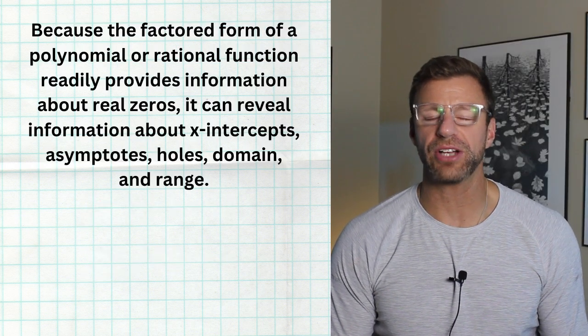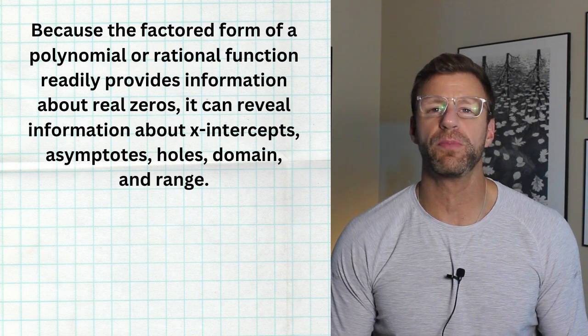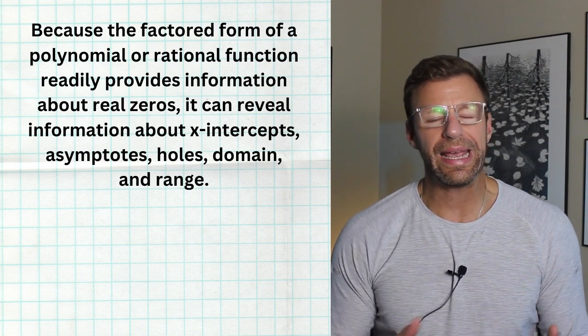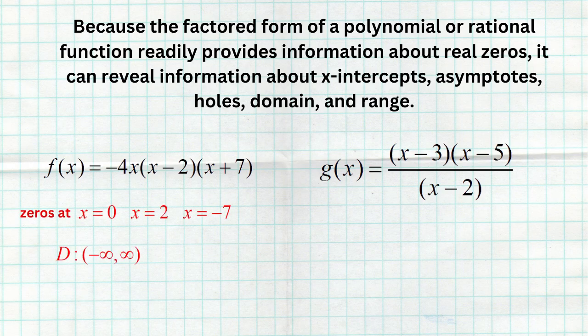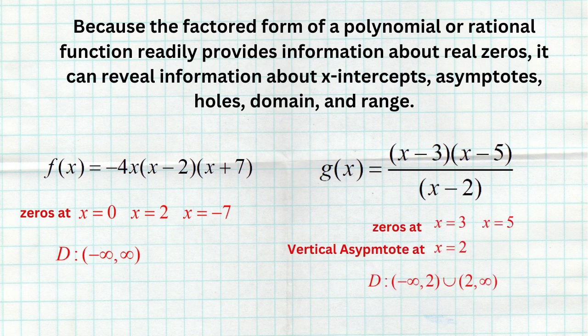Whereas factored form of a rational or polynomial function gives us a lot of information about zeros, vertical asymptotes, holes, and even domain and range. These two examples are actually the factored forms of the previous functions. When the polynomial f(x) is in factored form, it's easy to see the three zeros at 0, 2, and -7. For the rational function g(x), we can see two zeros at 3 and 5, a vertical asymptote at x = 2, and no holes. So the first part of topic 1.11 reminds us how different representations tell us different things.